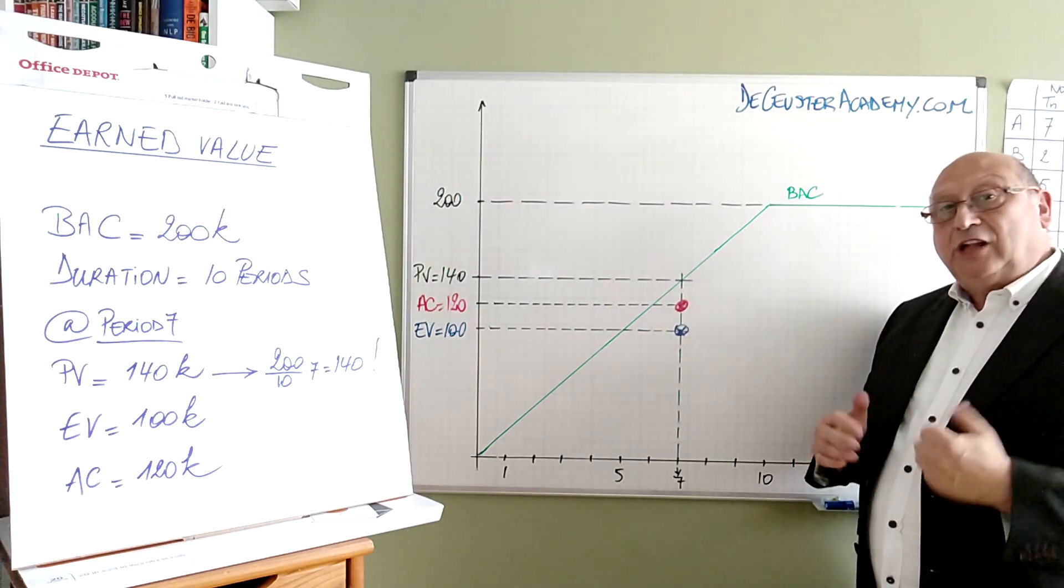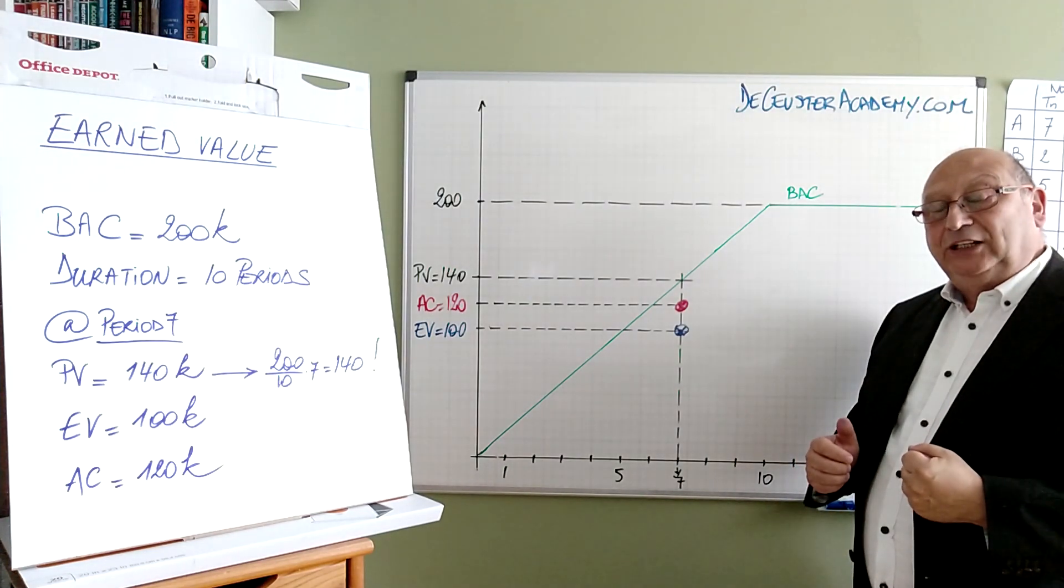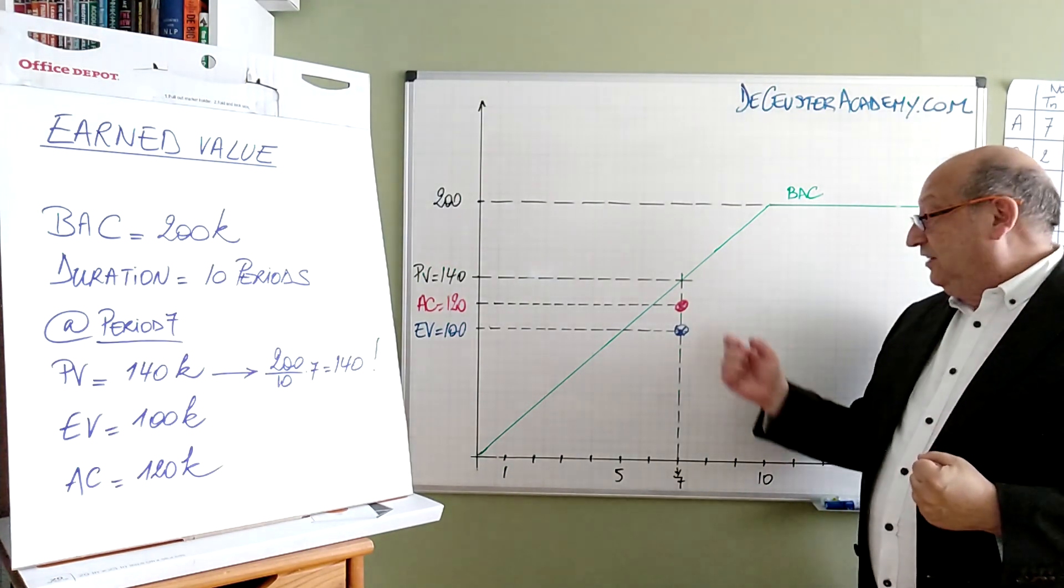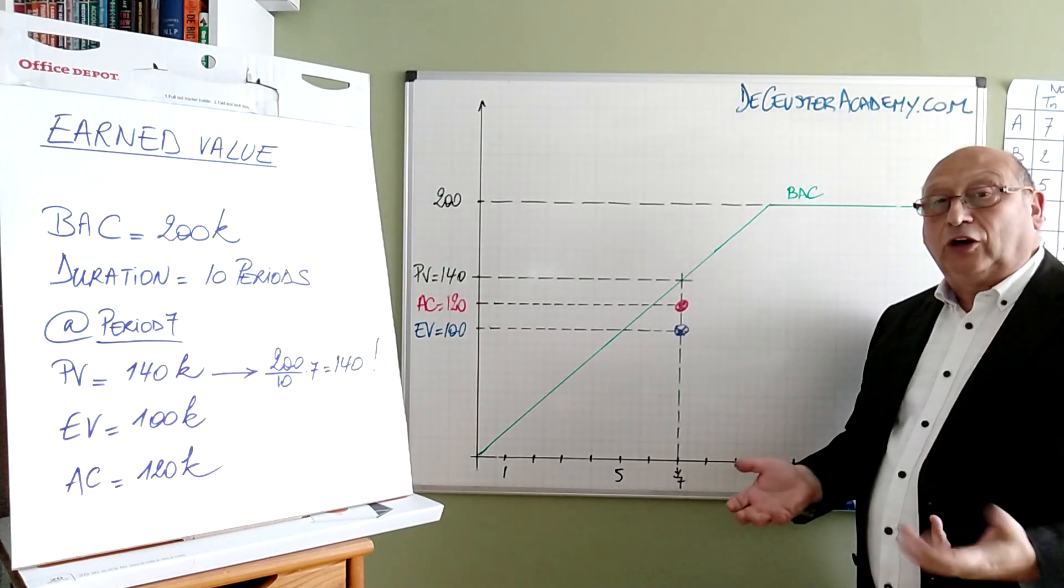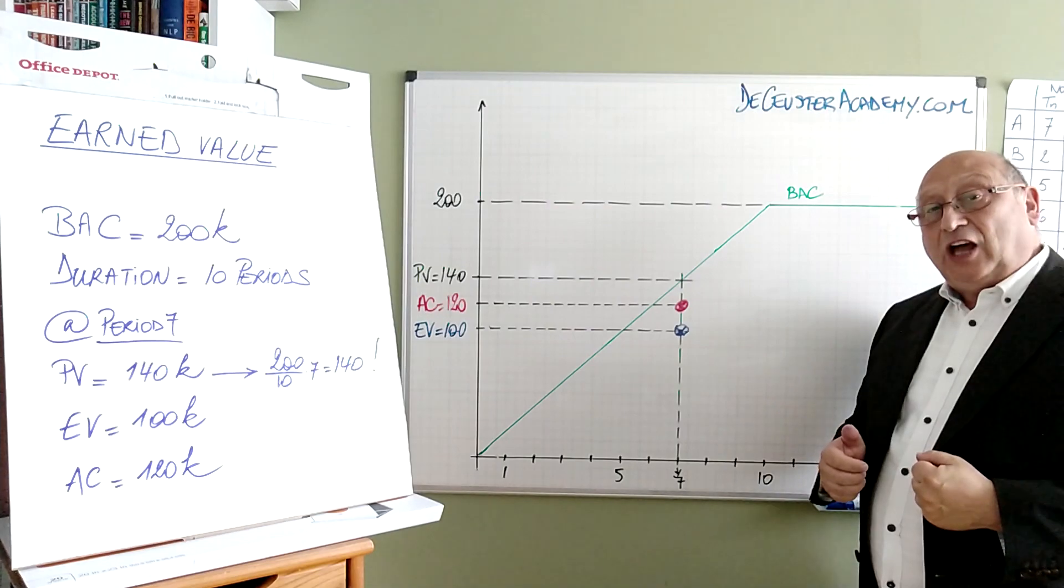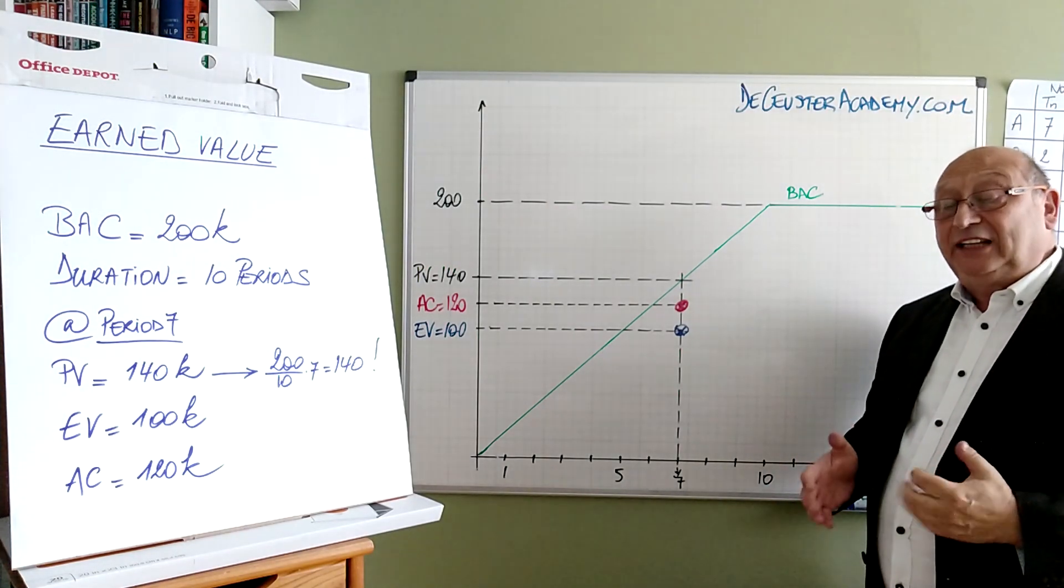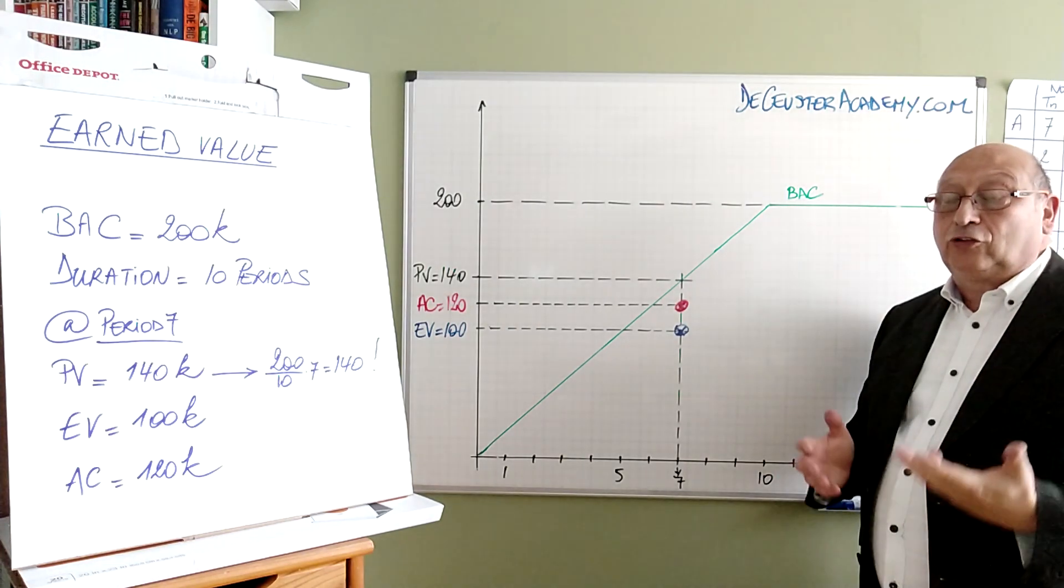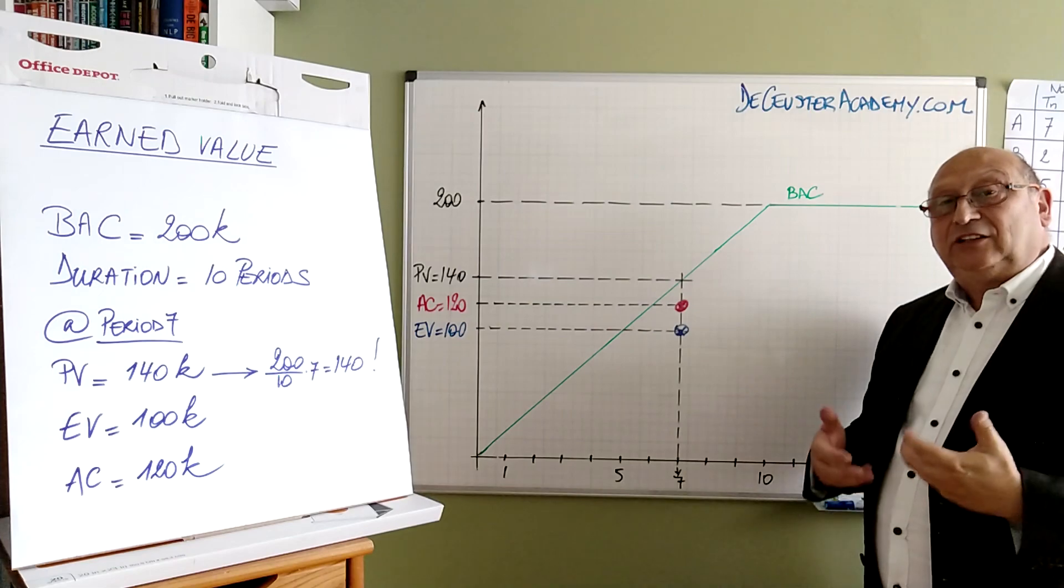This is the actual cost. Now when we look in a classical approach related to project management people would say this is great because we're below the planned value. We're below the cost. Experience however has shown that this is not always correct. In most cases this is not correct because we're forgetting some other parameter: the schedule.